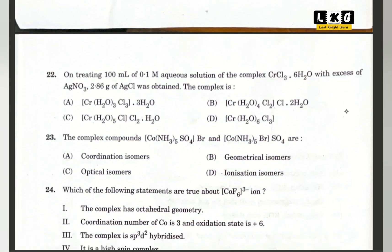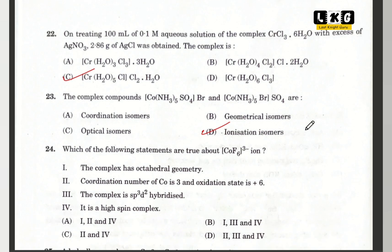Question number 22, option C is correct. Question number 23: the complex compounds are ionization isomers — the formula is changed. Question number 24: which of the following statements are true about this complex? Option B is correct — statements 1, 3 and 4 are correct.